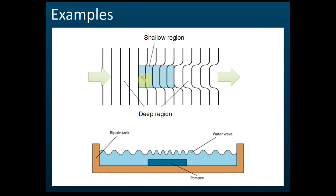In the textbook or in an exam, they will just show you this diagram, so you need to understand what it means. It means that as the wave reaches the perspex region, because it is shallower, the wavelength becomes shorter and the wave moves slower. After passing through the perspex, the wavelength in that region is left behind.